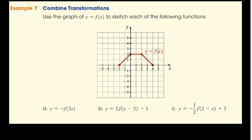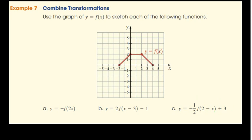Part C looks horrible. We have: adding 2 to the variable (horizontal shift), a negative variable (reflecting across the y-axis), a negative of the function (reflecting across the x-axis), multiplying the parent function by a fraction between 0 and 1 (vertical compression), and finally a vertical shift up 3 units. That's a lot — basically every single transformation covered.